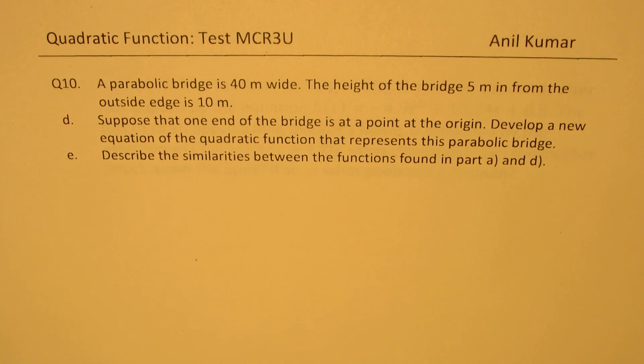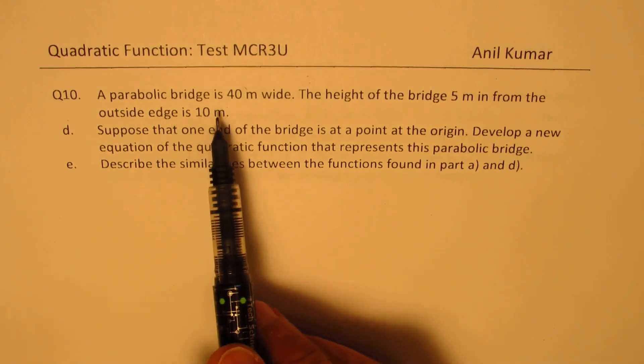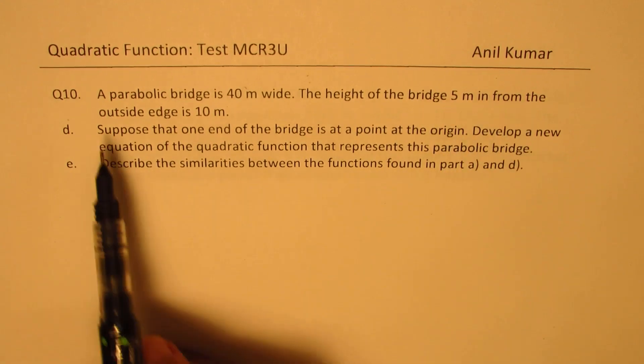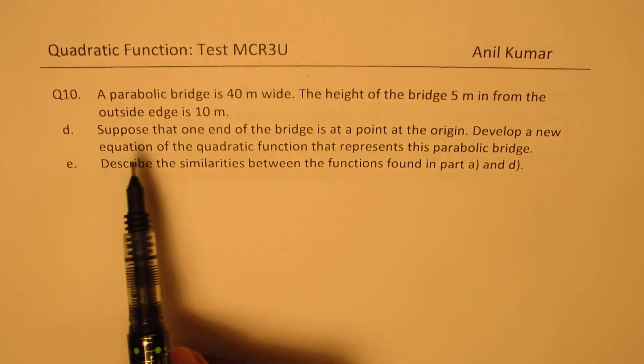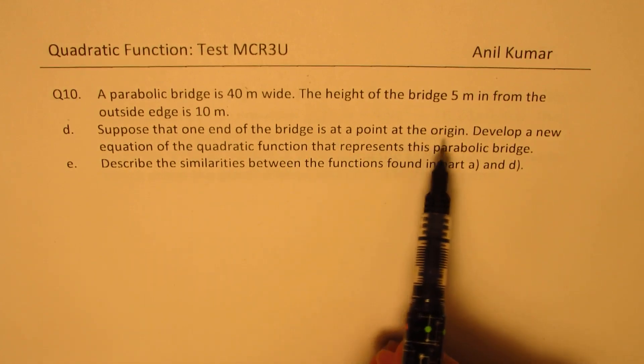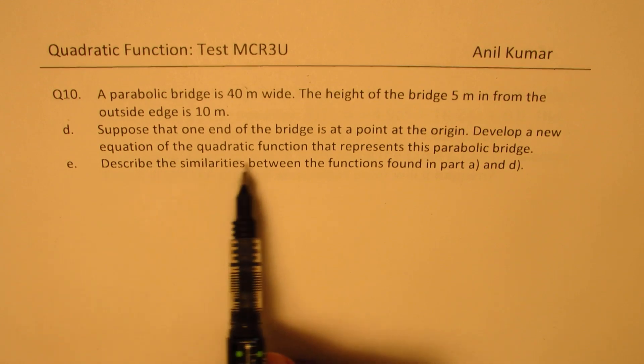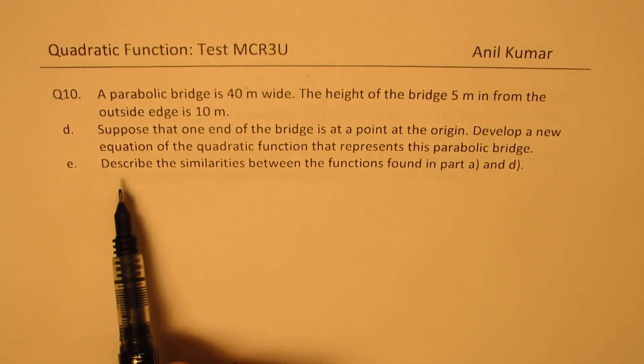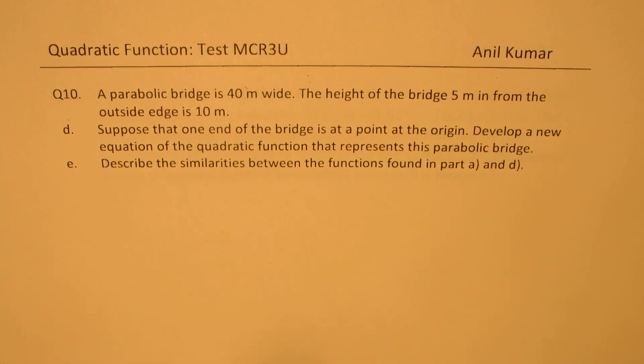Now let's look into part d and e. A parabolic bridge is 40 meters wide, the height of the bridge 5 meters in, from the outside edge is 10 meters. Suppose that one end of the bridge is at a point at the origin, develop a new equation of the quadratic function that represents this bridge. And part e is described the similarities between the function found in part a and d.